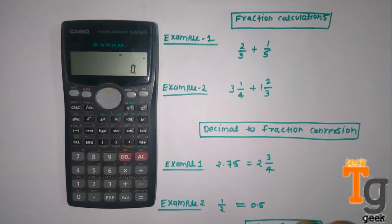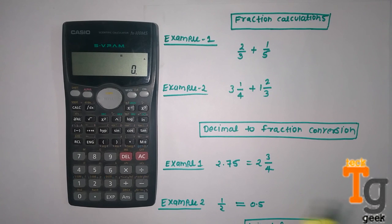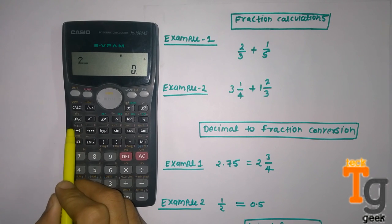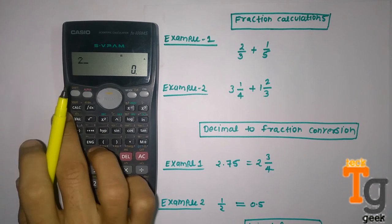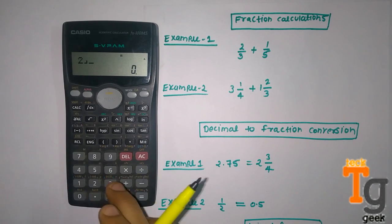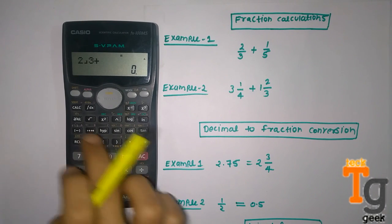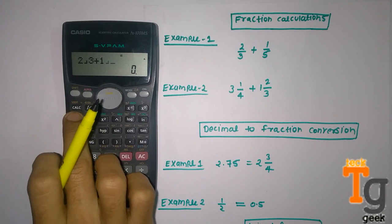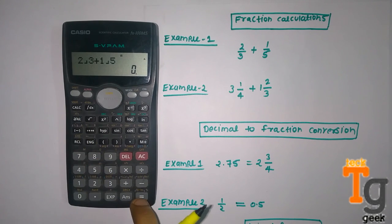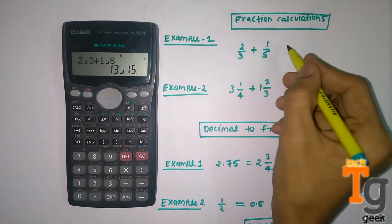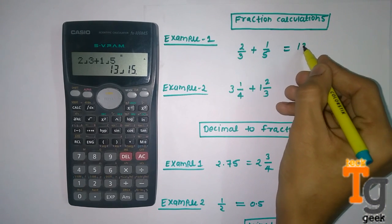First you have to enter 2, and then you have to click this button a b/c, then 3, plus, then 1, again this a b/c, 5, and it is your answer 13/15.